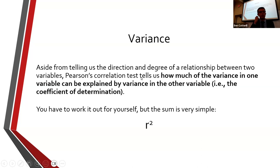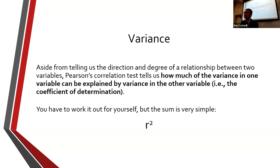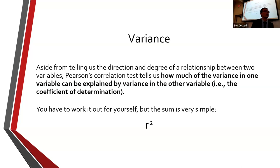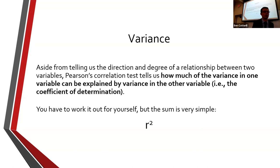Another example: height and weight reliably has a correlation of 0.6. So 0.6 times 0.6 is 36%. By knowing someone's height, we can explain 36% of the difference in their weight. And then obviously there are other factors that help explain the remaining variance.